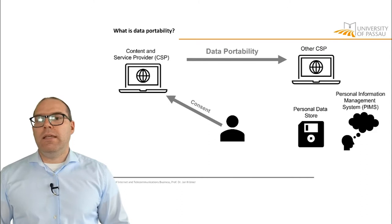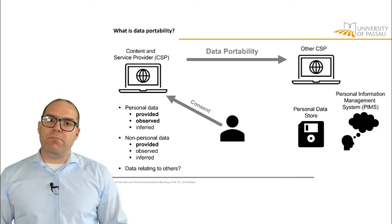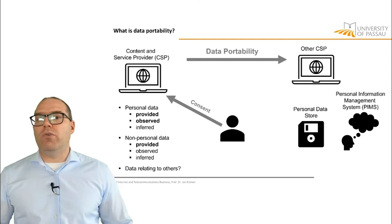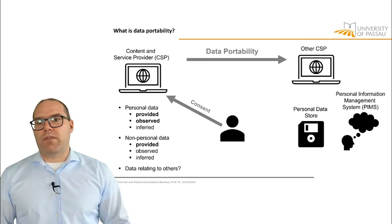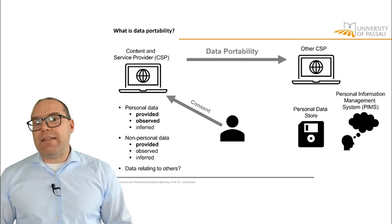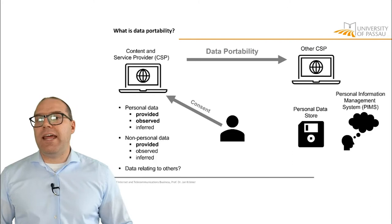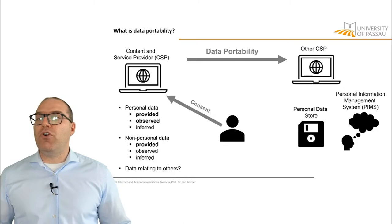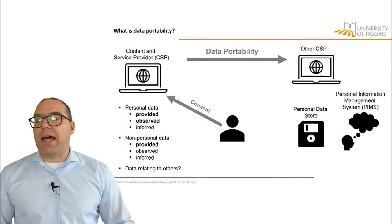Now, what kind of data can be ported? This is a key question in data portability. We have to differentiate between personal data and non-personal data, and potentially also data relating to others — for example, chat protocols usually contain not only your own data but also data of others that you were chatting with. Within personal data, we differentiate between data that was provided by you, such as your name or address, and data that is observed by using the service, such as clicks recorded or songs you liked at a music streaming service. And then there is inferred data — data that is inferred about you, for example what your tastes, likes, and dislikes are from the data that has been provided or observed.